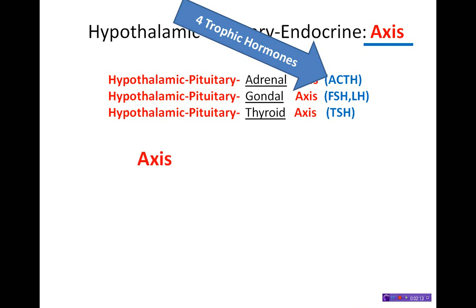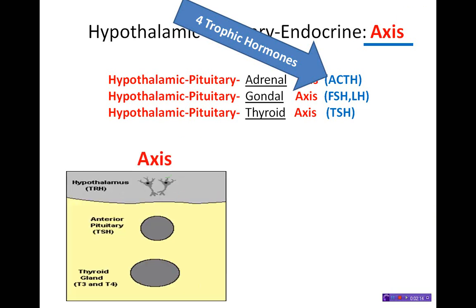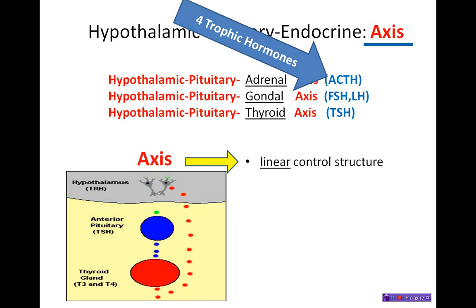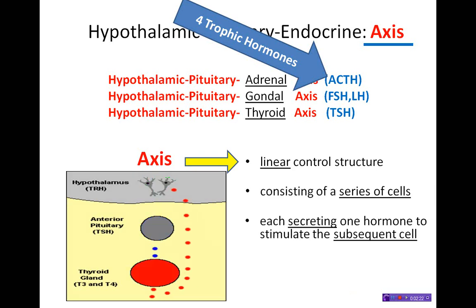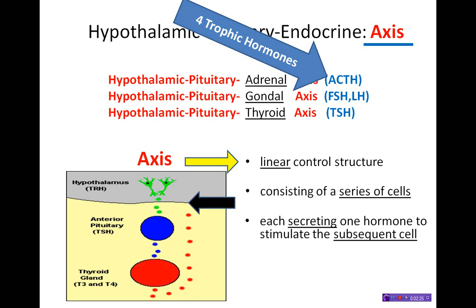What exactly is an axis? An axis is a linear control structure consisting of a series of cells where each cell secretes one hormone to stimulate the subsequent cell.